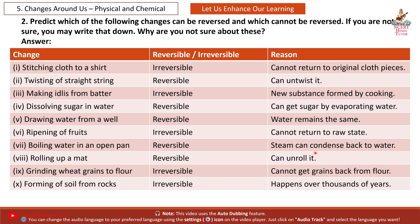8th: rolling up a mat — REVERSIBLE. Reason: can unroll it. 9th: grinding wheat grains to flour — IRREVERSIBLE. Reason: cannot get grains back from flour. 10th: forming of soil from rocks — IRREVERSIBLE. Reason: happens over thousands of years. You can note these down.